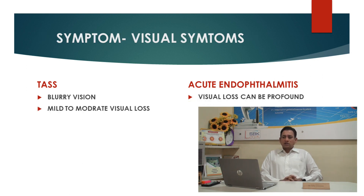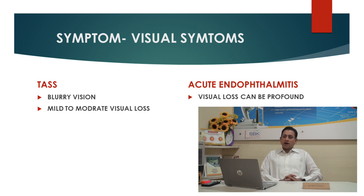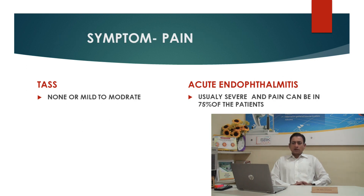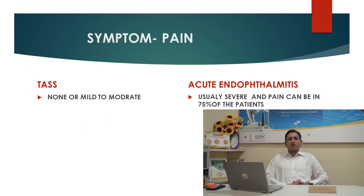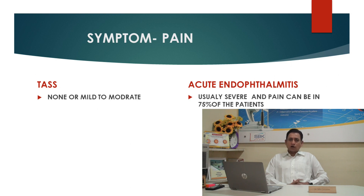Comparing visual symptoms: in TASS there will be blurring of vision or mild to moderate visual loss, whereas in acute endophthalmitis visual loss can be profound. In TASS there will be no pain or just mild to moderate pain, whereas in endophthalmitis there will be severe pain, present in up to 75% of endophthalmitis cases.